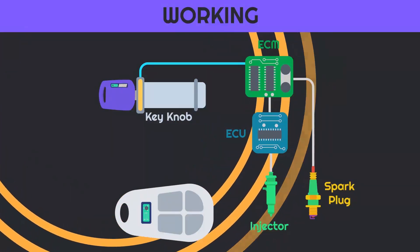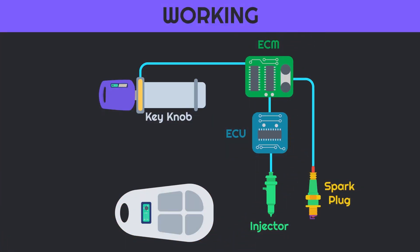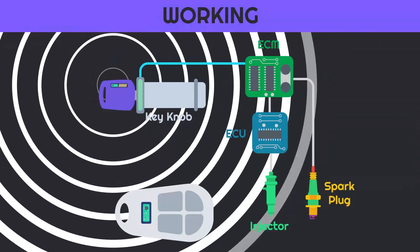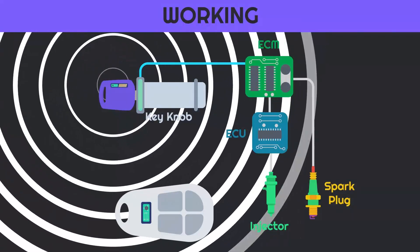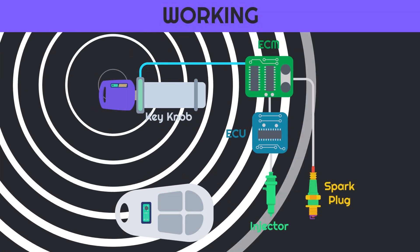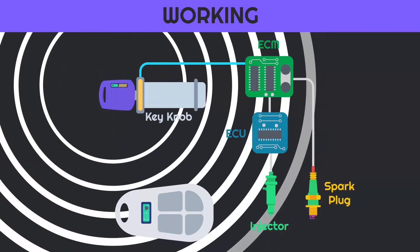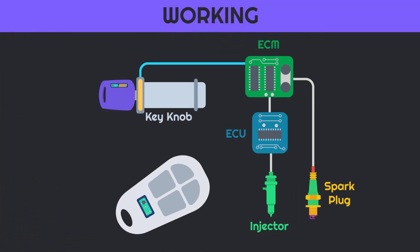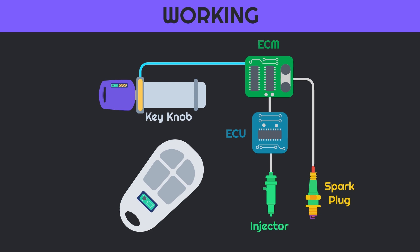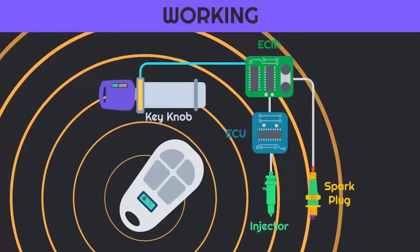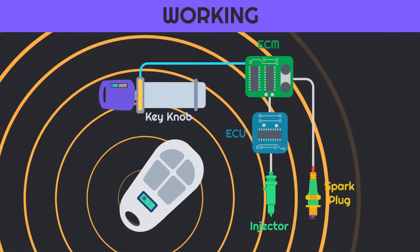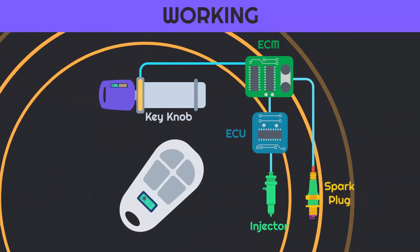If you insert a duplicate key, it either transmits the wrong code or does not transmit any code at all. This means the ECU fails to identify the key, and thus the engine cannot be started due to ignition and fuel system cutoff. In the case of keyless entry, the transponder uses the remote battery to transmit the signal, which is received by the ECM, and thus the car can be started.